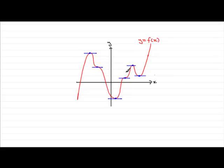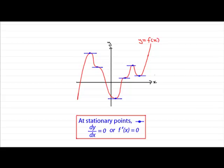And in order to find the x-coordinates of these stationary points, what you had to do was find the gradient at any point on the curve by differentiation and put that gradient dy by dx equal to zero, or possibly f dash x equal to zero if you're using f(x) notation. Let's get on with an example.